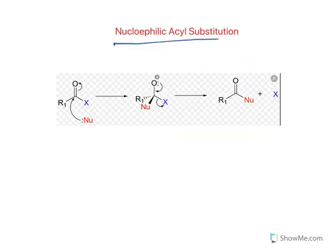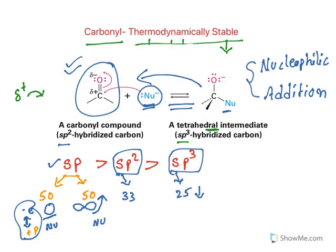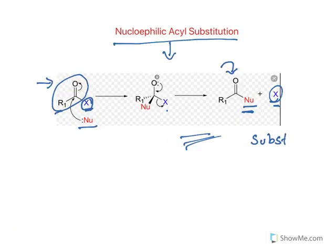The other pathway is nucleophilic acyl substitution. If a group can leave after nucleophilic addition, the nucleophile attaches, the carbonyl group is retained, and a substitution occurs — the attacking nucleophile replaces a leaving group on the acyl carbon. Since the thermodynamically stable carbonyl is retained, this is a substitution reaction. These are the two major pathways on carbonyl groups: nucleophilic addition and nucleophilic acyl substitution.